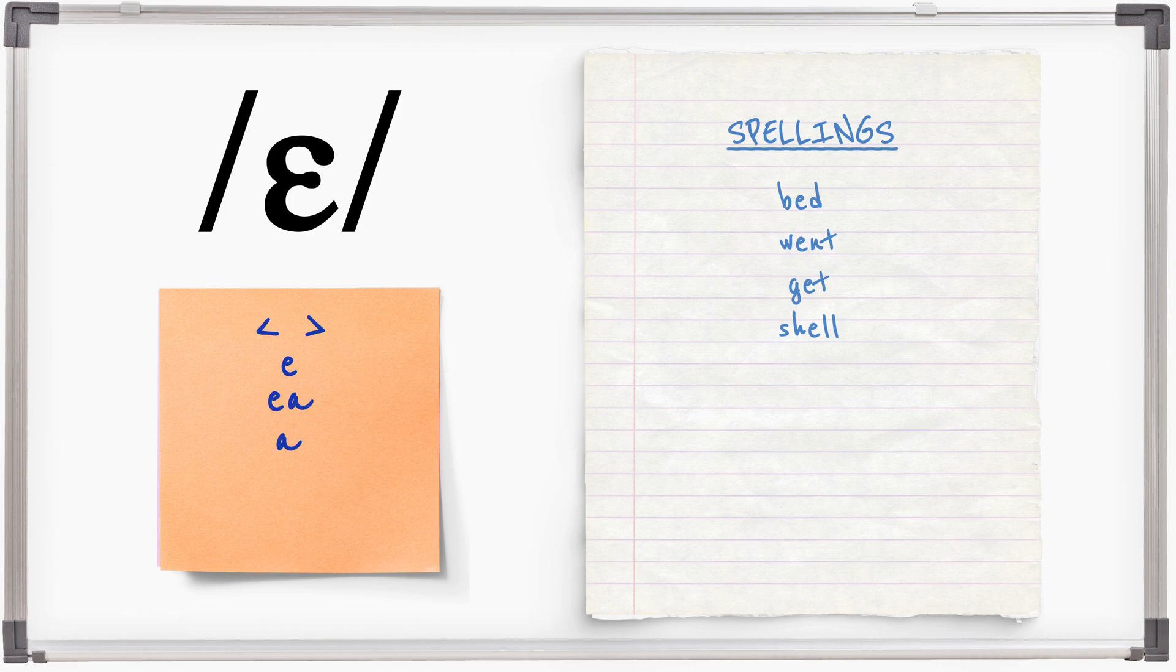Some words are spelt ea: head, bread. And some with a: any, many, et. Irregular spellings of e are found in bury, friend, says, again.